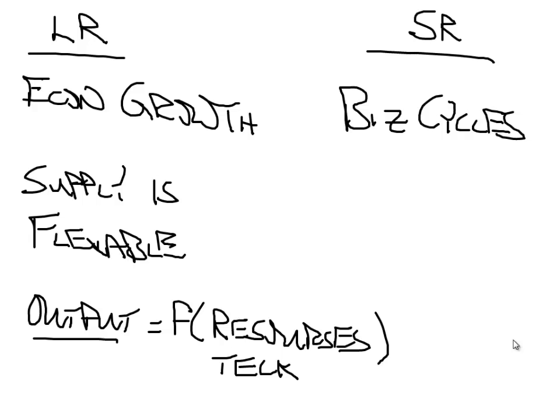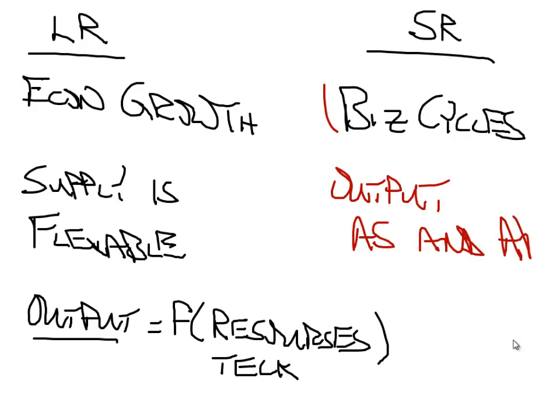In the short run, on the other hand, we have these business cycles, and output is actually the interaction of what we'll call aggregate supply and aggregate demand. The interactions of supply and demand for all the different markets in the economy actually determine what this output is.